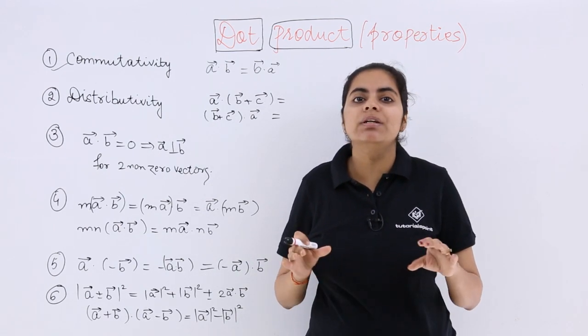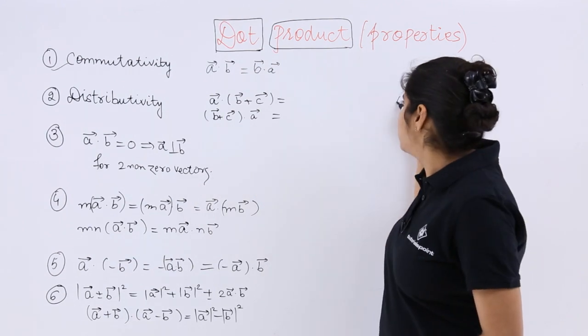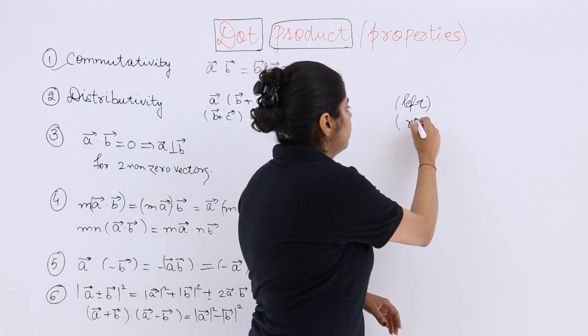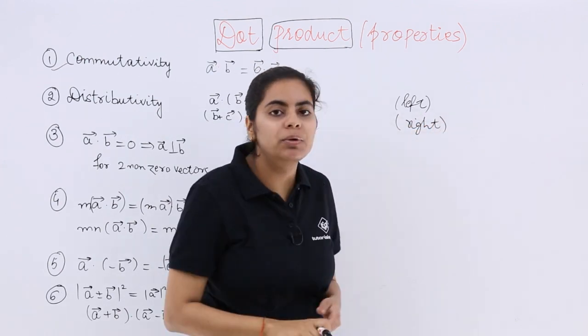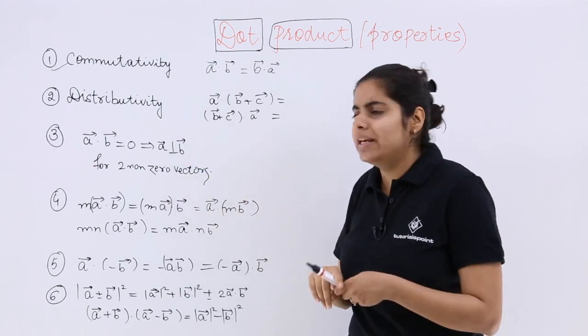Next is distributivity. Now distributivity can be termed as left distributivity or right distributivity. Left distributivity is the first case, right distributivity is the second case. Very easy.